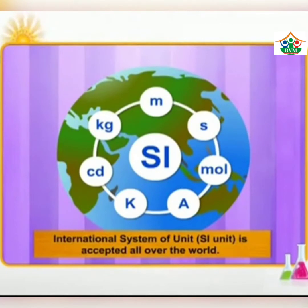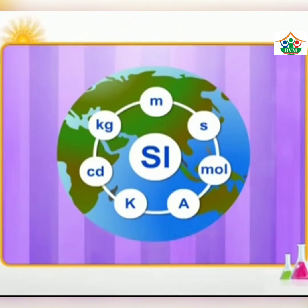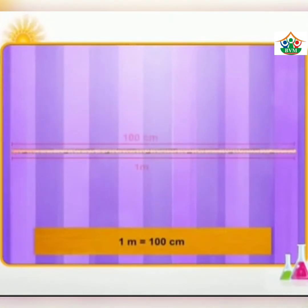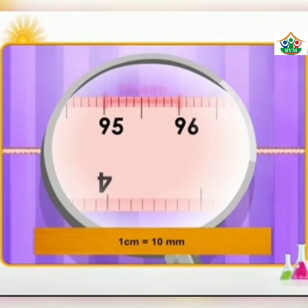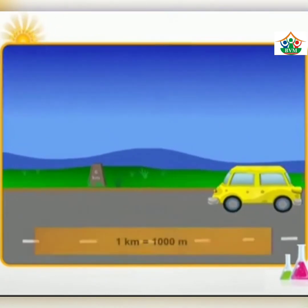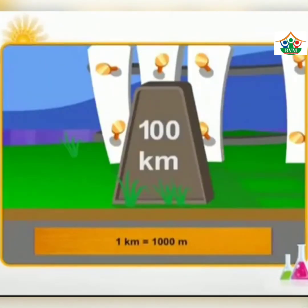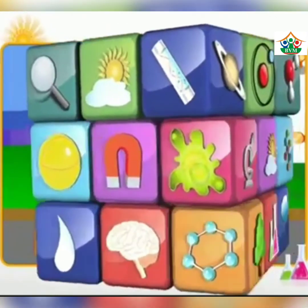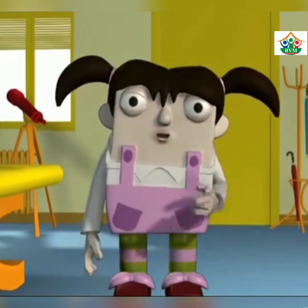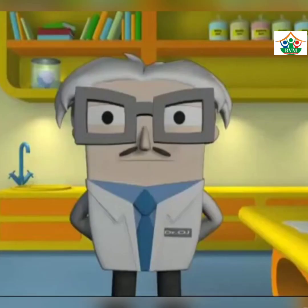Now here is the SI system — Standard International System. This is the exact method that always remains the same units all over the world. The SI unit to measure length is meter. One meter equals one hundred centimeters all over the world — you cannot change it. One centimeter is always equal to ten millimeters. One kilometer is always equal to one thousand meters throughout the whole world. So the SI system is the best system to measure different units of length.